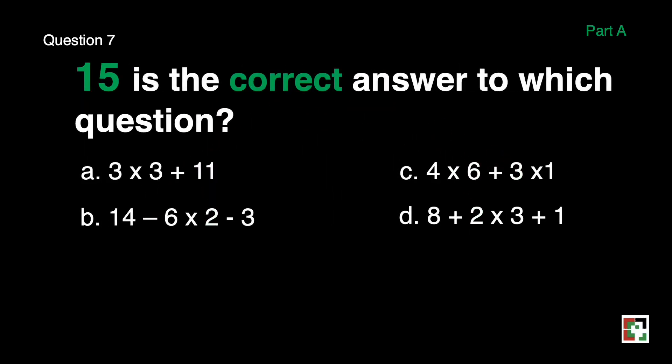Question number 7. 15 is the correct answer to which question? A, 3 times 3 plus 11. B, 14 minus 6 times 2 minus 3. C, 4 times 6 plus 3 times 1. And D, 8 plus 2 times 3 plus 1.